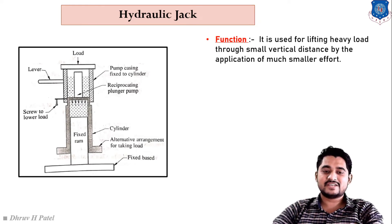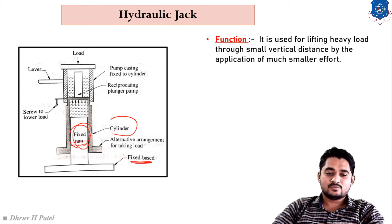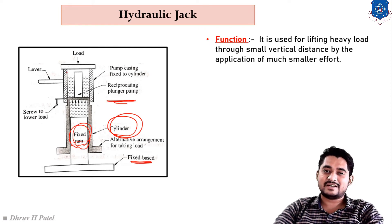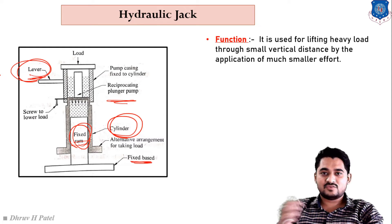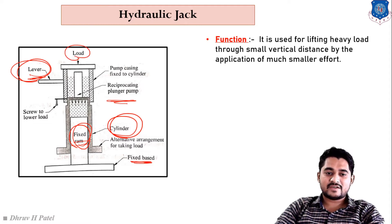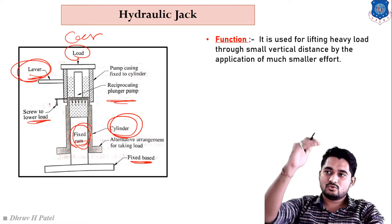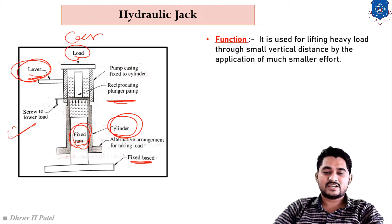In the construction of the hydraulic jack, one fixed ram is attached at a hard base. On the ram, one moving cylinder is attached. On that moving cylinder, one reciprocating plunger pump is attached, which is operated with the use of a lever. The load — for example, a car — is placed on top. There is also a screw to lower the load. Whenever our work is finished, we use this screw to lower the car back to its original position.